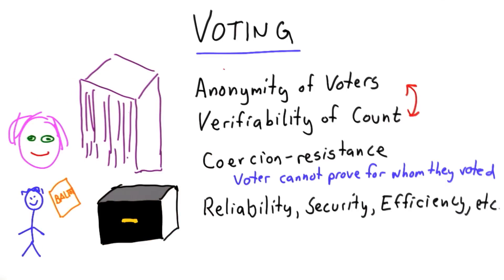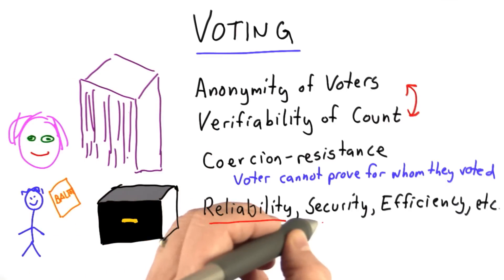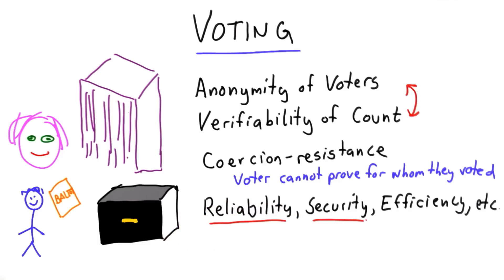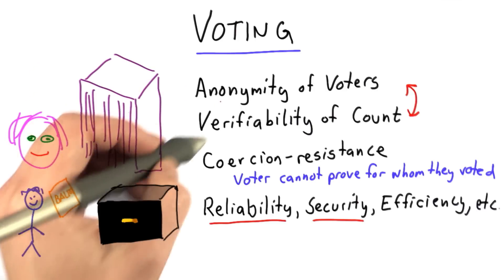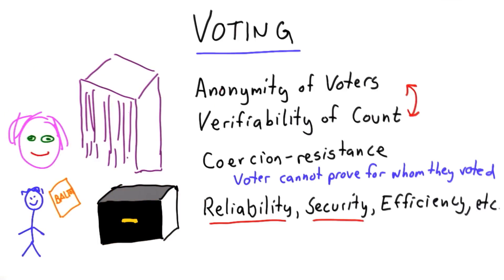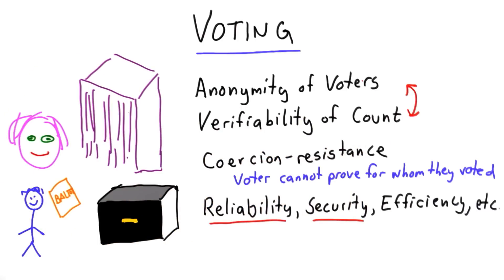We're going to look at one interesting cryptographic way to do voting, but I want to emphasize that this is not a solution to the real problems that are necessary to run an election. But it solves this issue of can you keep votes anonymous and still have a way to verify that the count is correct.